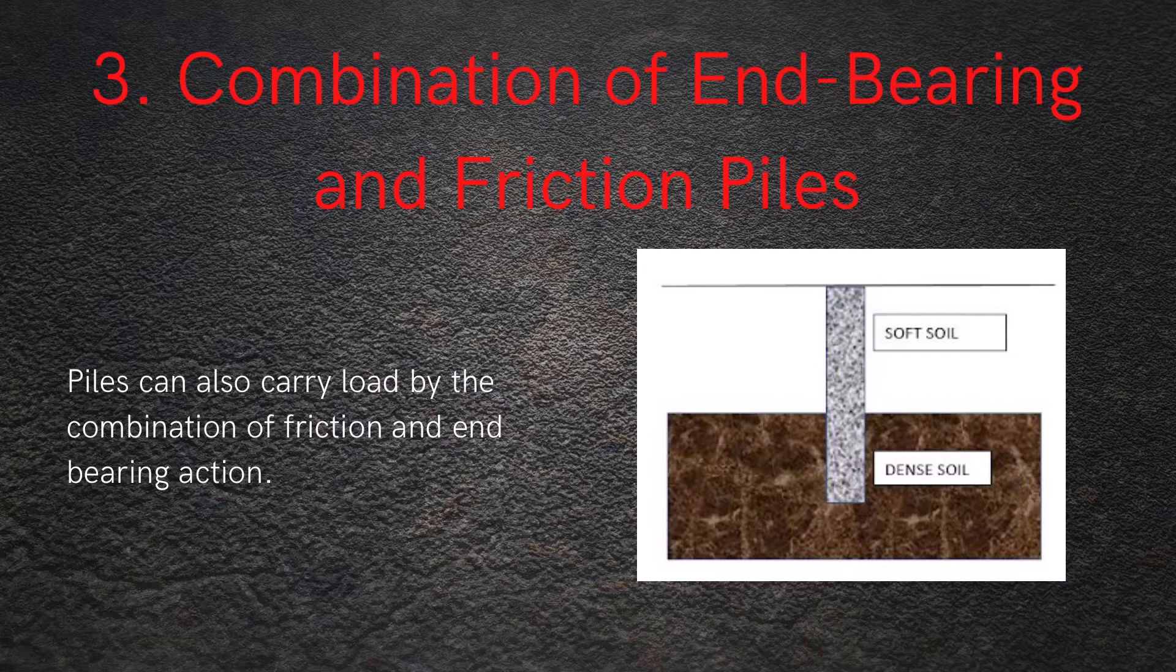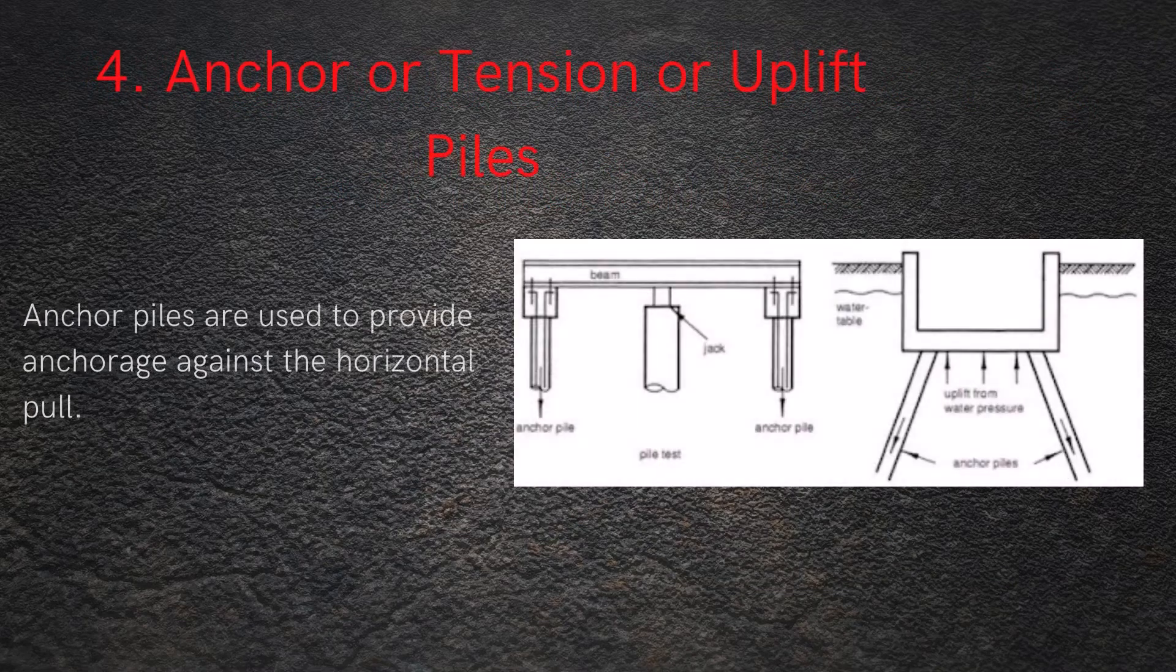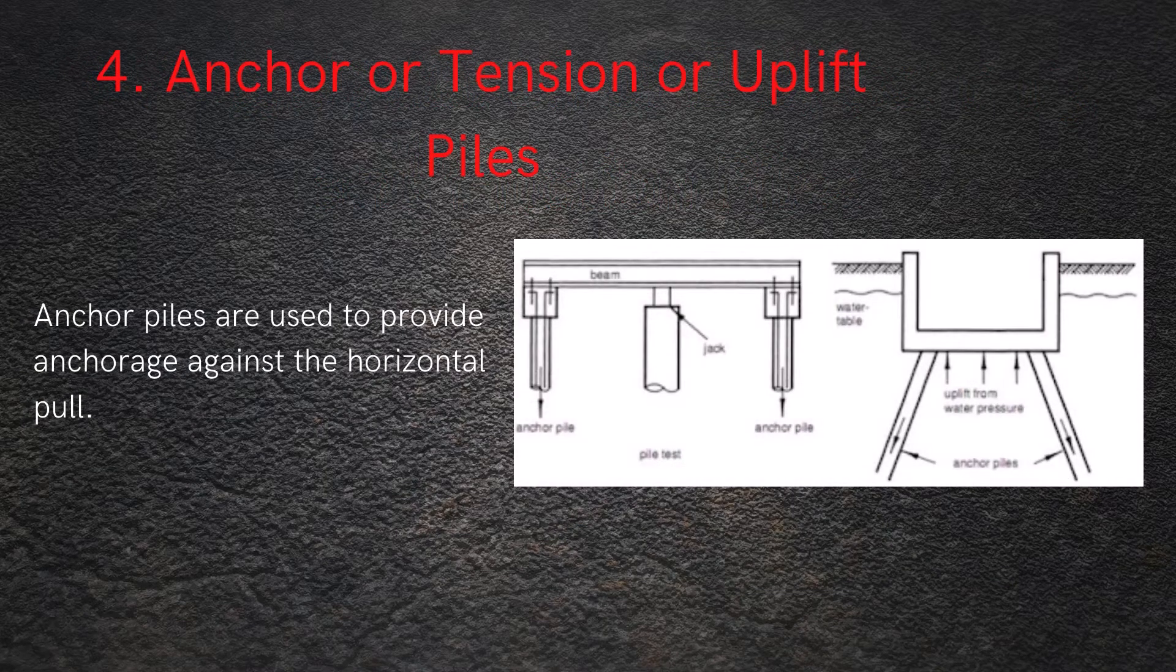Number four is anchor or tension or uplift piles. As the name says, these are piles used to resist extra tension or uplift of structures happening due to some external lateral force. So these piles are used to anchor the superstructure from overturning or tilting.